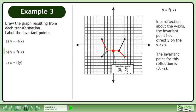In a reflection about the y axis, the invariant point lies directly on the y axis. The invariant point for this reflection is on the y axis.